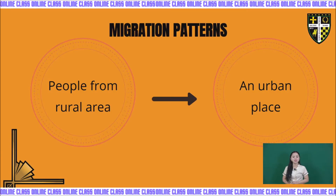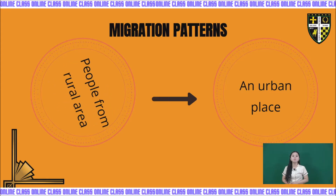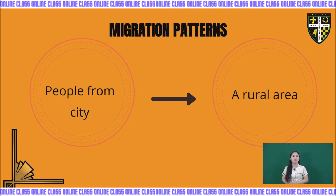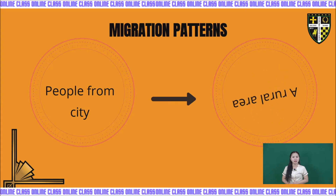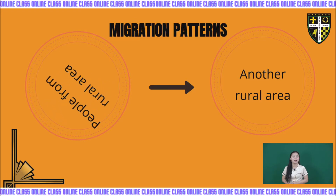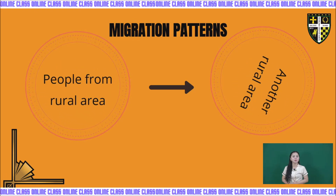So, migration patterns are the modes of migration. Number one, we have people from rural area to urban place. Number two, people from city to rural area. And then, people from rural area to another rural area.